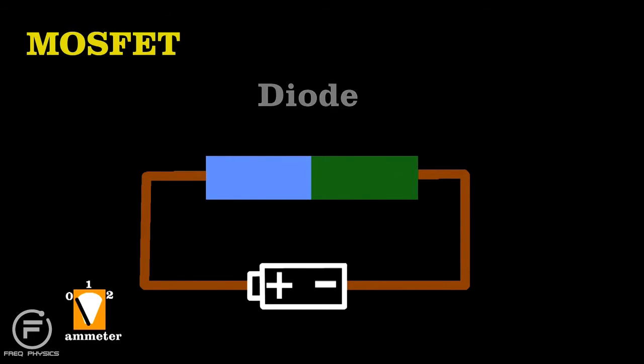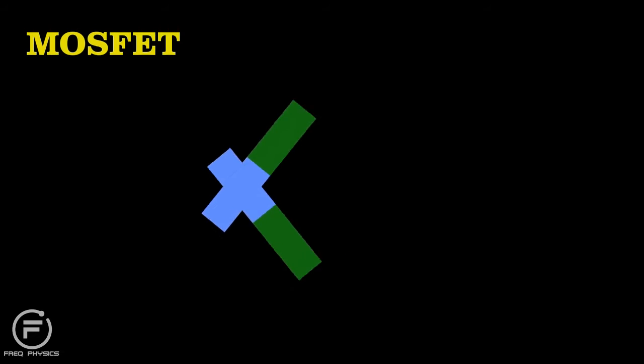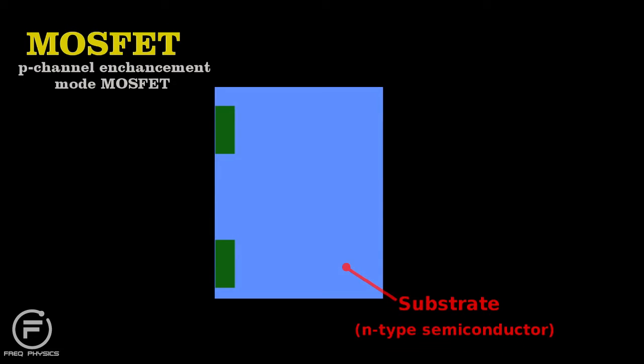Now to build a MOSFET, we take two such diodes and put them together so that each is reversed. Now this seems useless, because no current will ever flow through such an arrangement. But engineers embed this diode sandwich into the same type of semiconductor as the diode ends that touch.